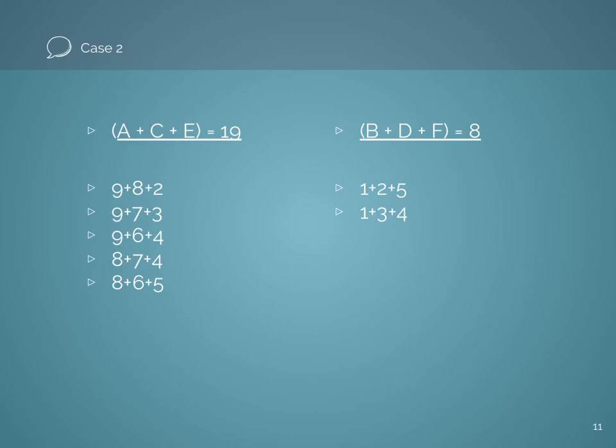We can do a very similar thing with ACE equaling 19 and BDF adding up to 8. So I have an organized list for each type. And then I try to figure out which cases pair so that we don't repeat any digits.